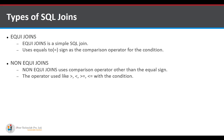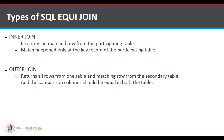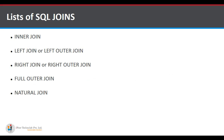There are two types of equi joins: inner join and outer join. An inner join returns only the matched rows from the participating tables — the match happens only at the key records. In an outer join, all rows from one table and matching rows from the secondary table are returned, and the comparison column should be equal in both tables. The various types of SQL joins covered in this video are: inner join, left join (left outer join), right join (right outer join), full outer join, and natural join.